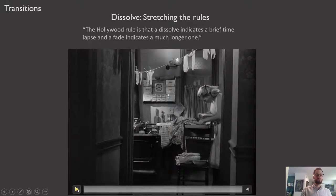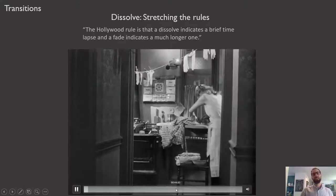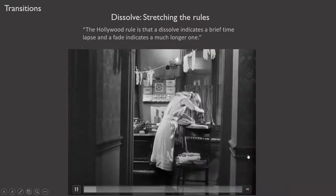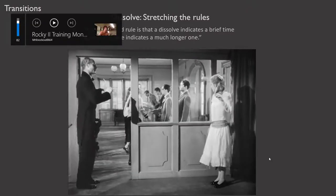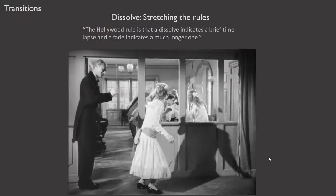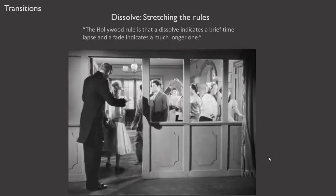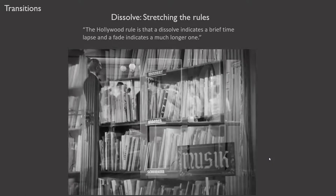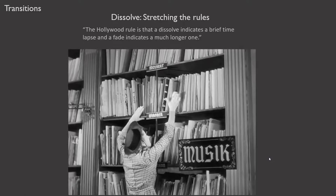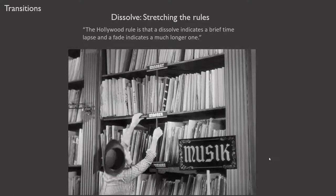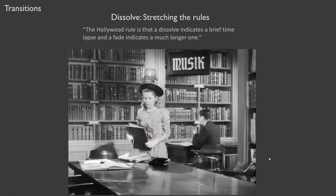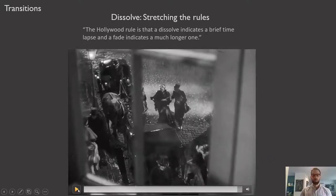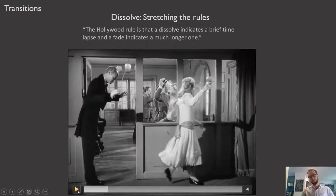Another example of dissolve stretching the rules — a set of dissolves that isn't merely a simple temporal ellipsis from Letter from an Unknown Woman: 'I went to dancing school, I wanted to become more graceful and learn good manners for you... I went to the library and studied the lives of the great musicians of the past.' Watch this sequence and pay attention to the way it uses dissolves — notice how it's slightly different from dissolves used as simple temporal ellipsis.